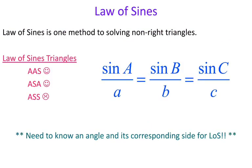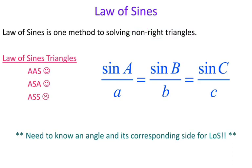What is Law of Sines? Law of Sines is a method for solving non-right triangles. With right triangles, we use SOHCAHTOA to solve for angles and sides. For non-right triangles, there are two methods: Law of Sines and Law of Cosines. The Law of Sines triangles are angle-angle-side, angle-side-angle, and angle-side-side.